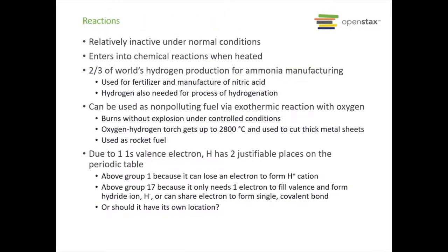Hydrogen itself is pretty inactive under normal conditions, but once you heat it up it enters into chemical reactions. Two-thirds of the world's hydrogen production is used for ammonia manufacturing — ammonia is used for fertilizer and the manufacture of nitric acid. We also need hydrogen for the process of hydrogenation — you may have heard of partially hydrogenated oils for things like margarine — where hydrogen is used to break double bonds in organic compounds. Hydrogen can also be used as a non-polluting fuel because of its exothermic reaction with oxygen, and oxygen-hydrogen torches can reach up to 2800 degrees Celsius, used to cut thick metal sheets. This reaction is also used for rocket fuel.